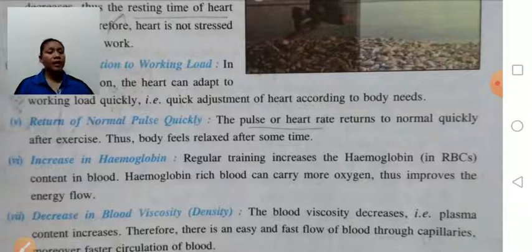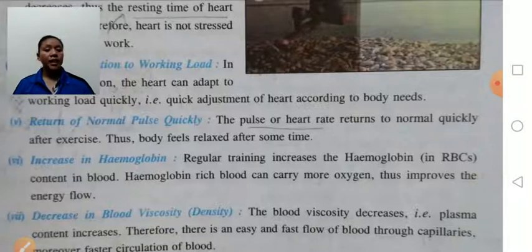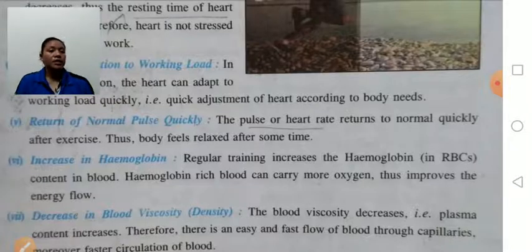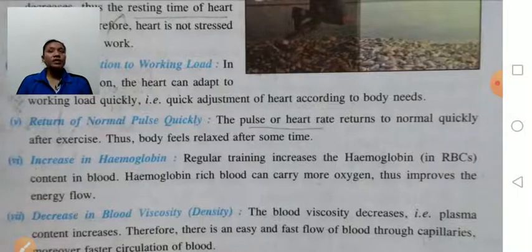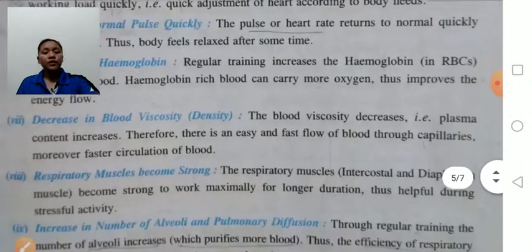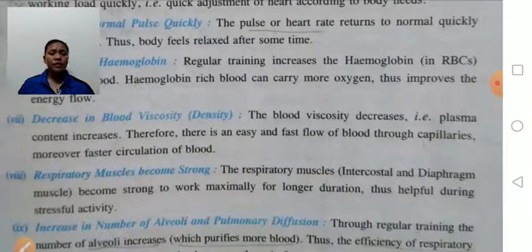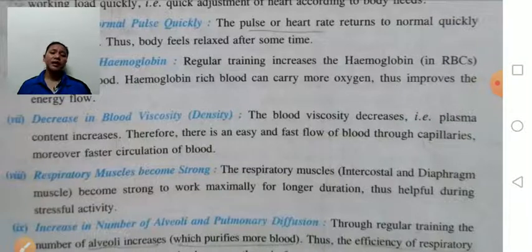Increase in hemoglobin: regular training helps to increase hemoglobin in the blood — in the red blood cells. Hemoglobin-rich blood carries more oxygen and nutrients. Thus if the hemoglobin in the blood is improved, the energy flow will be more. Decrease in blood viscosity: if the blood's viscosity decreases — meaning density of blood decreases — then the plasma contained in the blood increases, resulting in fast and easy flow of blood through the capillaries.